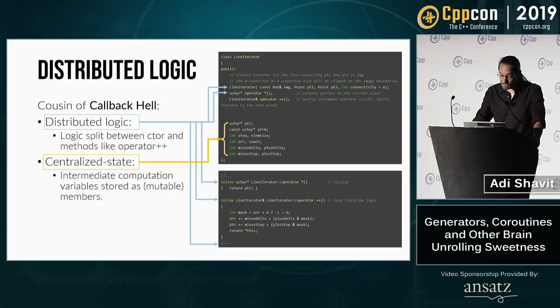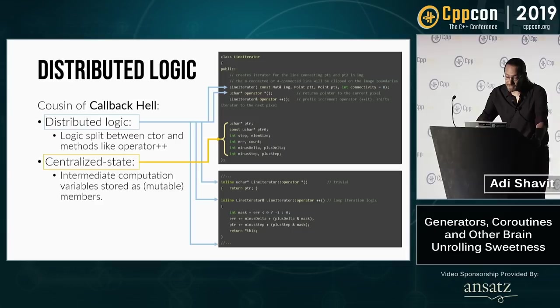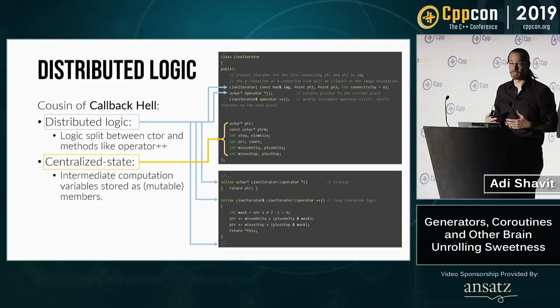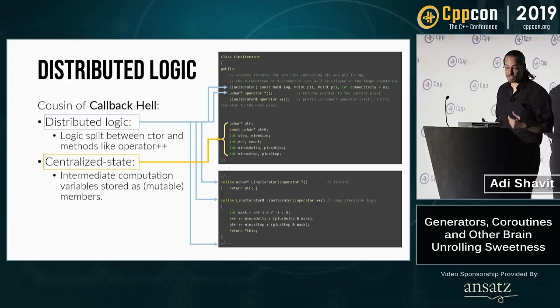Distributed logic is really the iterator cousin of callback hell, because the iterator API implementation requires us to have distributed logic and centralized state. While the iteration loop is externalized — which is what we wanted — the intermediate computation variables and state are stored as mutable members, and the iteration logic is split between the constructor and other member methods like the increment operator.